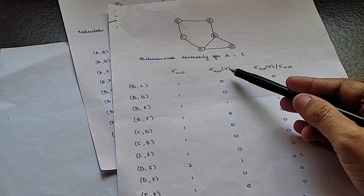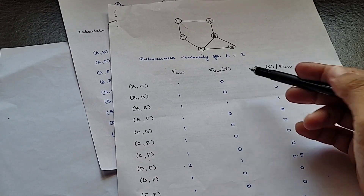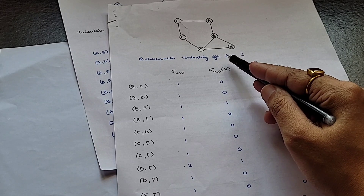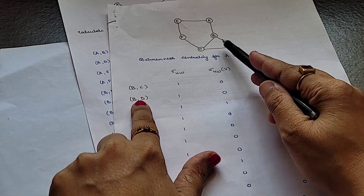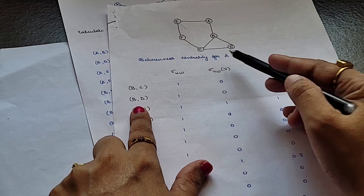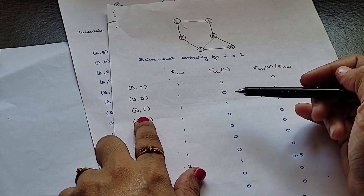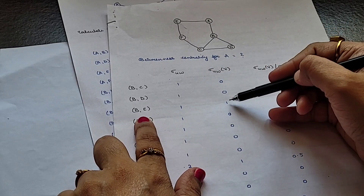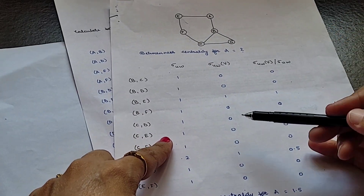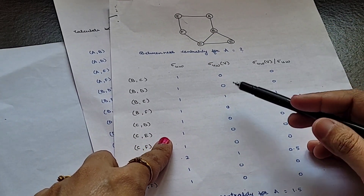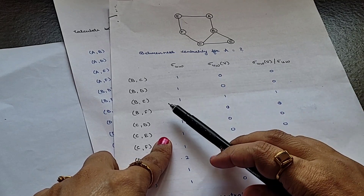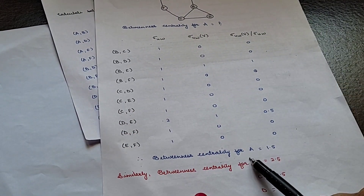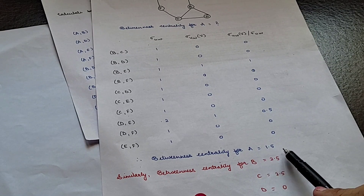Now find out the shortest paths passing through node A for betweenness centrality. For B to C, node A does not come in between, so this is 0. For B to E, the path B-A-E passes through A, so sigma(B,E,A) = 1. Find all such values, divide the sigma(U,V,A) column by sigma(U,V), and take the summation. The betweenness centrality for node A comes out to be 1.5.